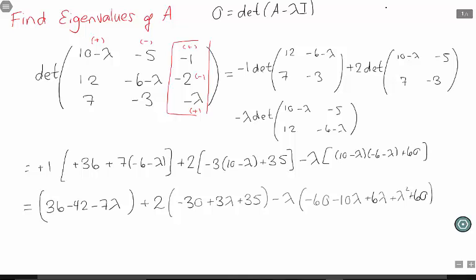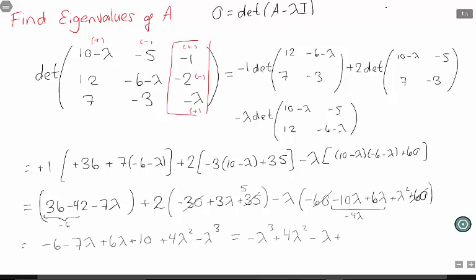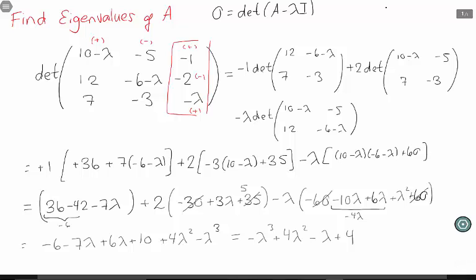I've simplified it down to a nice cubic function. So remember what we're trying to do: we want to find when this determinant is equal to 0. It's not always super easy to factor a cubic. The cubic version of the quadratic equation is extremely complicated. But this one factors quite nicely.